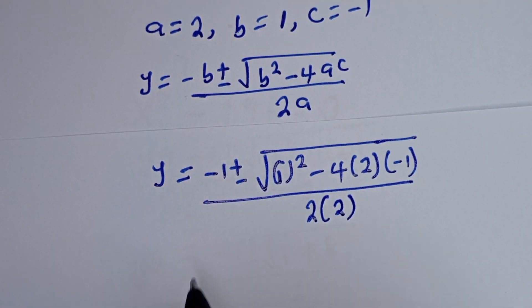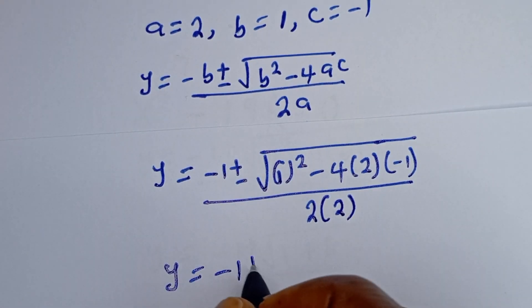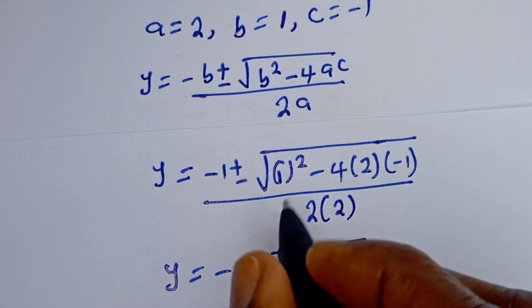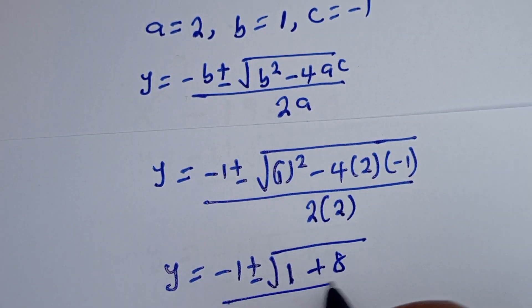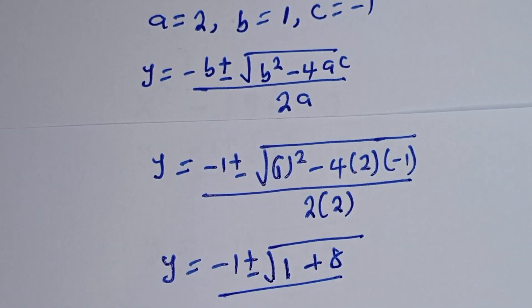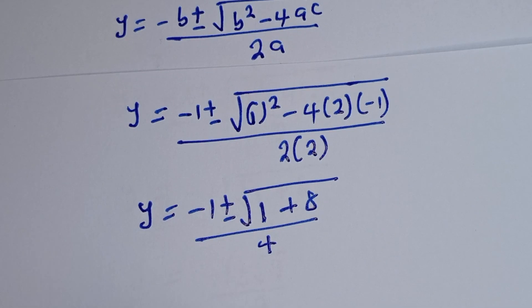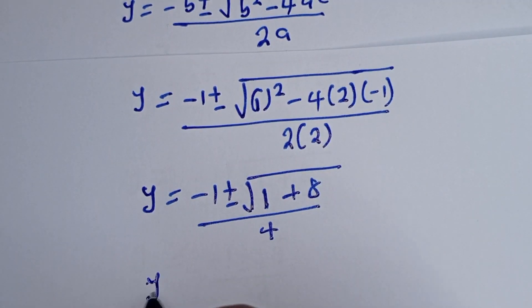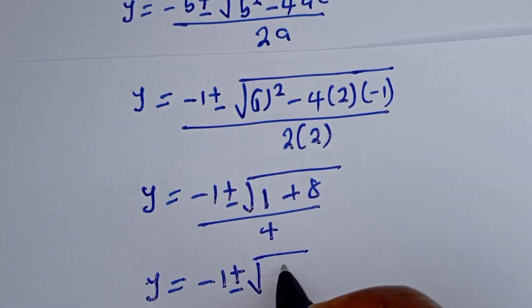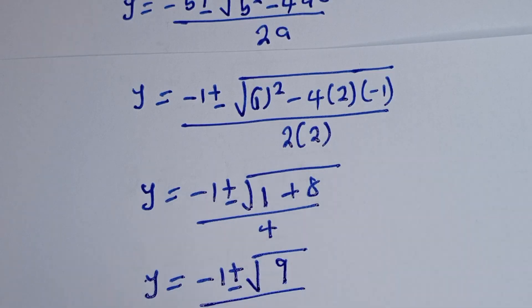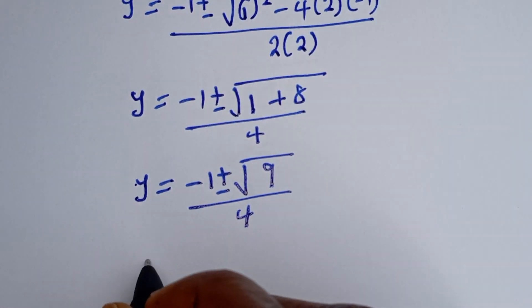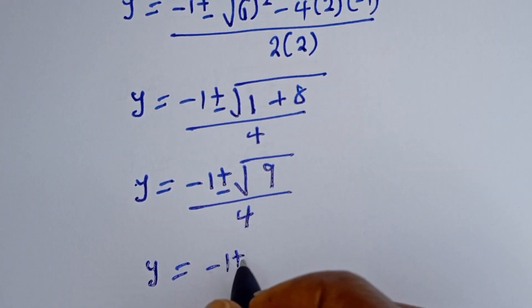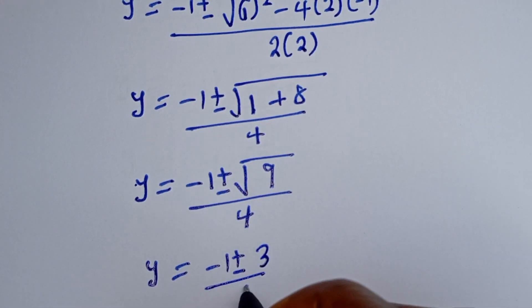So y is equal to minus 1 plus or minus square root of 1 minus 4 times 2 times minus 1, that is plus 8, over 2 times 2, that is 4. Then y is equal to minus 1 plus or minus square root of 1 plus 8, which is 9, over 4.